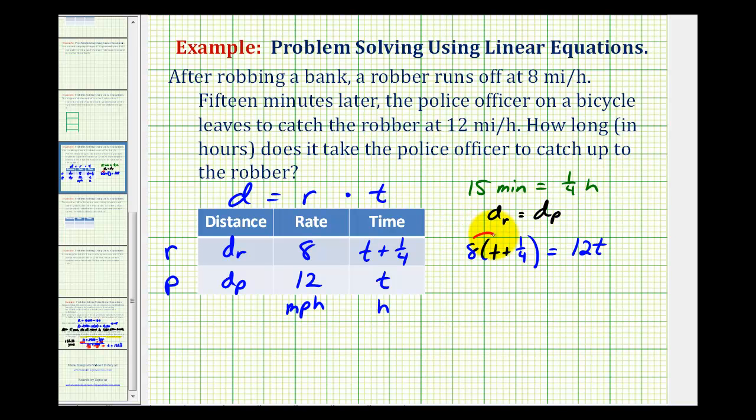So we'll start by distributing. This will be 8t plus 8 times 1 fourth is 2, equals 12t. Let's go ahead and subtract 8t on both sides of the equation. This will be 0, we'd have 2 equals, this will be 4t, divide both sides by 4, and we have t equals 1 half.